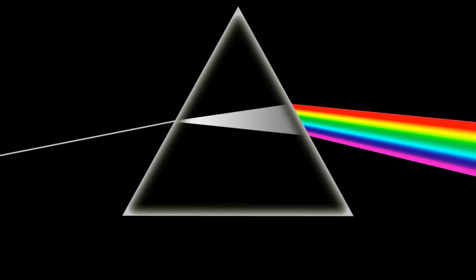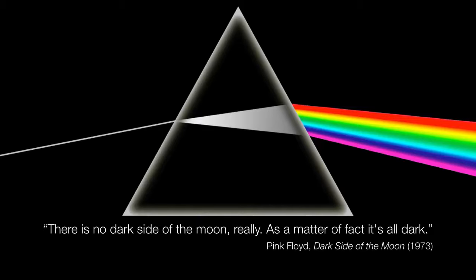Now, if you listen to Pink Floyd's Dark Side of the Moon, you may have noticed that after the very end of the last track, there's a voice overheard that says 'there is no dark side of the moon, really — as a matter of fact, it's all dark.' And I think that's a great way to wrap up this presentation on the moon, because we have shown that there is no such thing as a dark side. In other words, yes, there is a far side, but the near side of the moon is not always illuminated — sometimes it's dark.